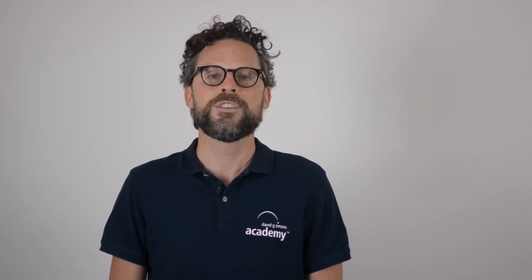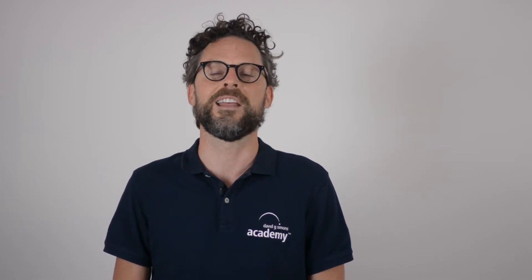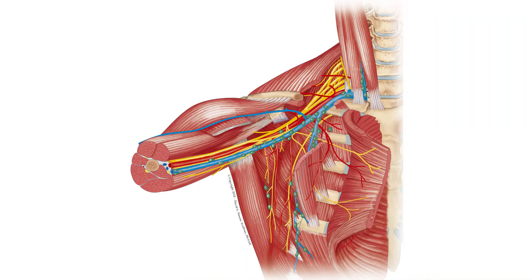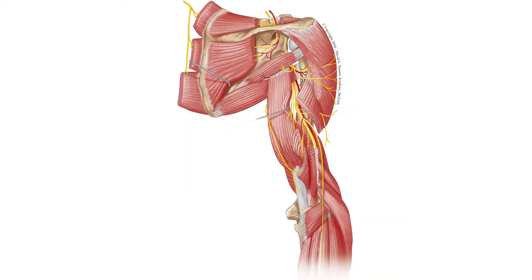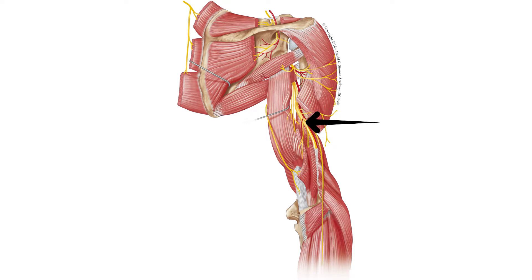Before palpation, we have to have a close look at the anatomy. The radial nerve arises from the posterior cord of the brachial plexus and passes posteriorly to the pectoralis minor muscle into the armpit. It reaches the posterior part of the upper arm laterally on the long head of the triceps brachii muscle. Up to here, the nerve is too deep to be palpated.